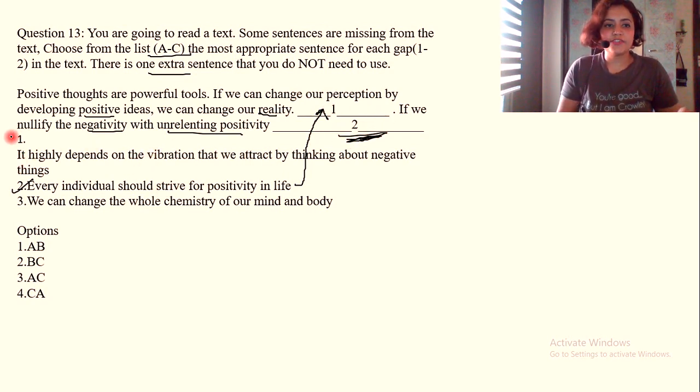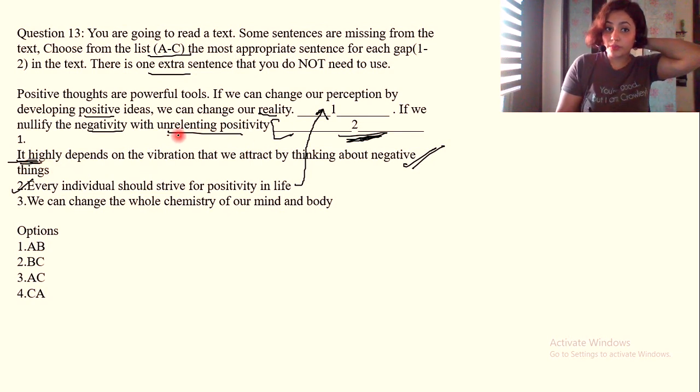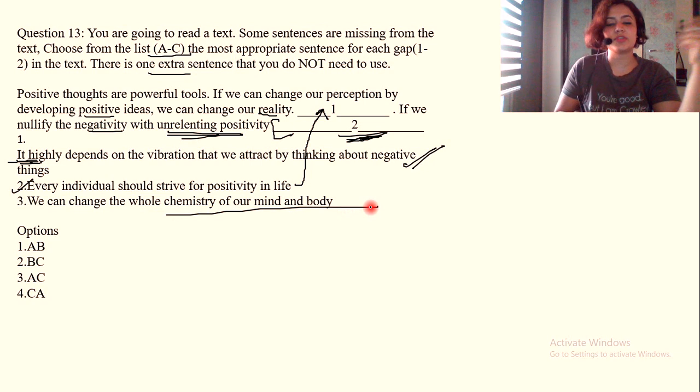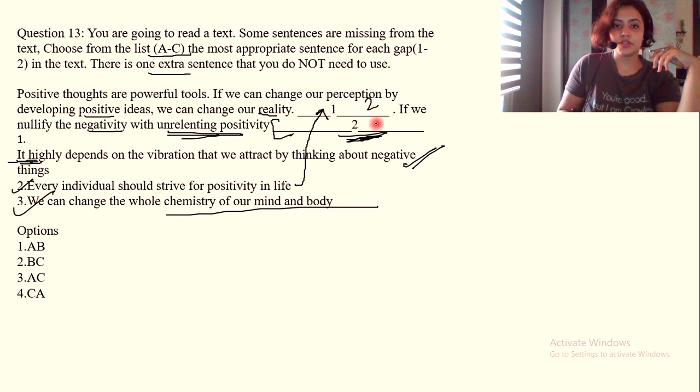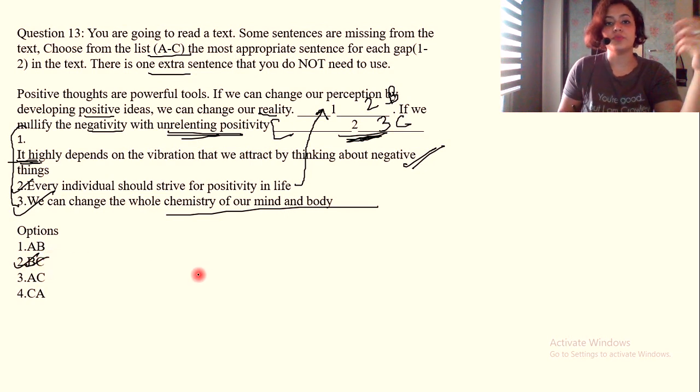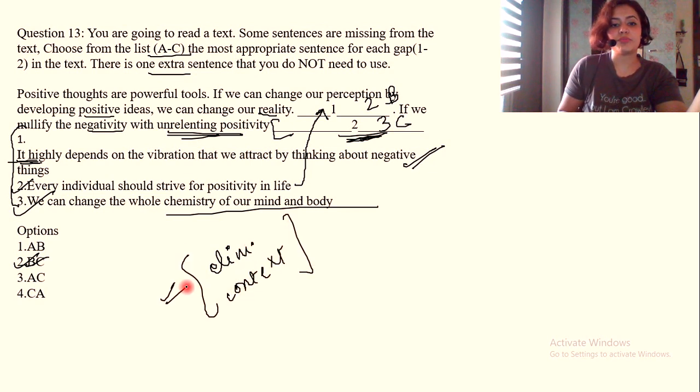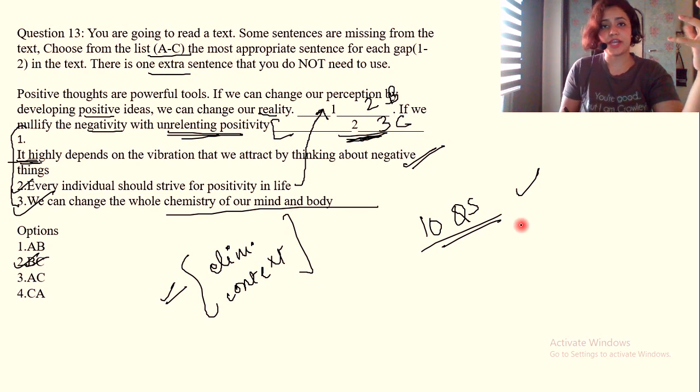If we can change our perception by developing positive ideas, we can change our reality. Every individual should strive for positivity in life. Let's hold on and see if we can put it there. If we nullify the negativity with unrelenting positivity, the sentence that comes here is already incomplete, so it cannot begin in a disjointed manner. It has to flow from here. If we nullify the negativity with unrelenting positivity, we can change the whole chemistry of our body. We have our answer: two and three, which is B and C, and the only option with B and C is two.